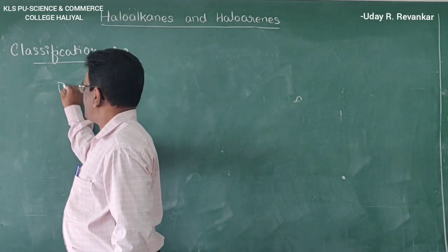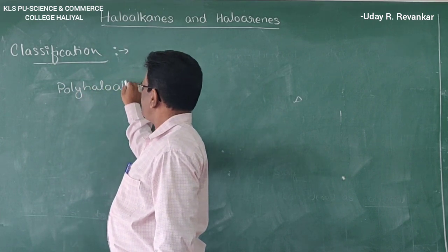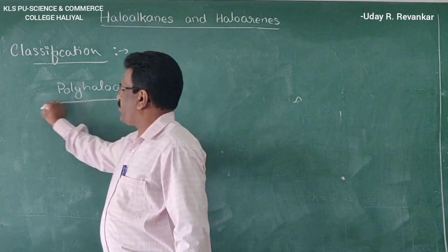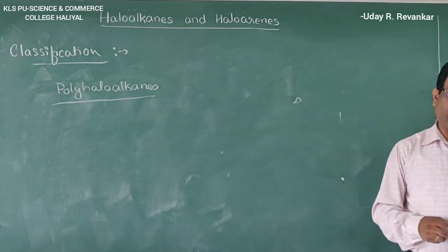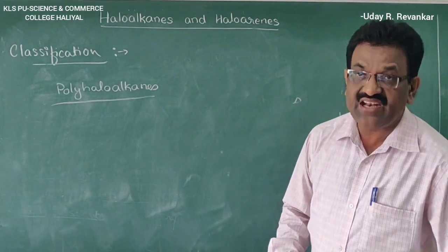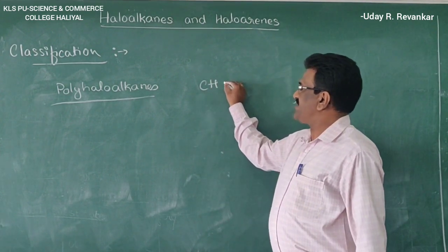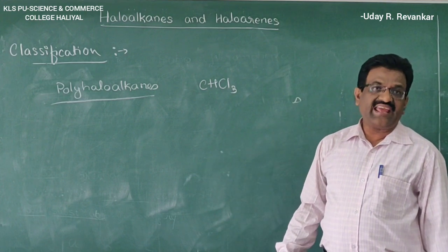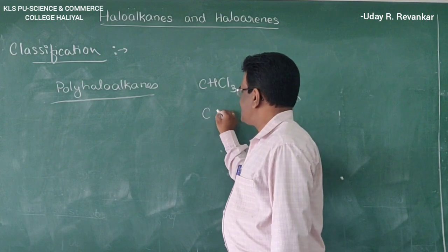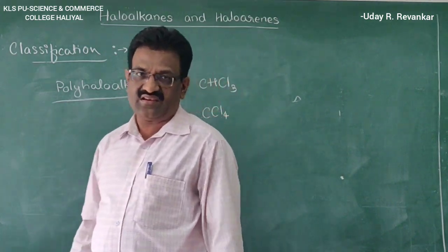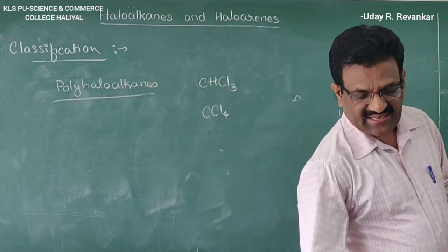Polyhalogen compounds are those compounds which contain more than two halogen atoms present in a molecule. For example, CHCl₃ — trichloromethane, also called chloroform. Another is CCl₄ — tetrachloromethane, also called carbon tetrachloride.